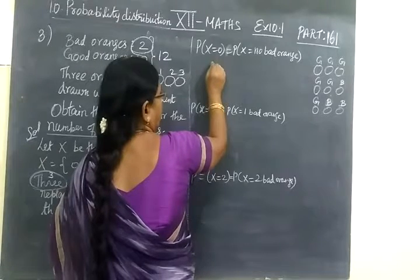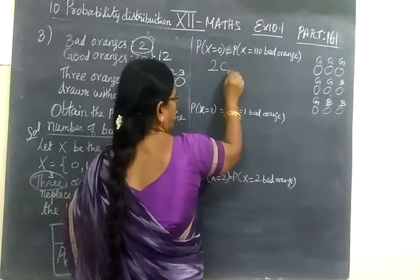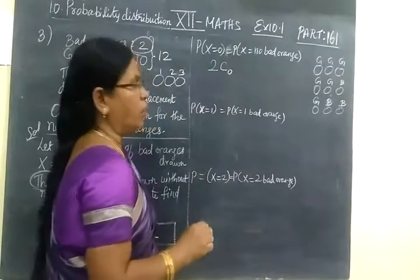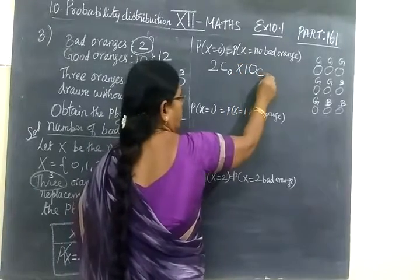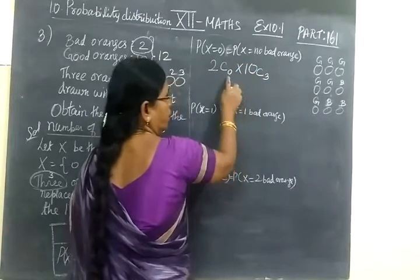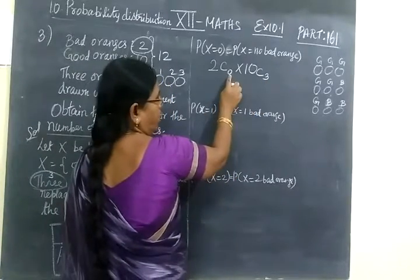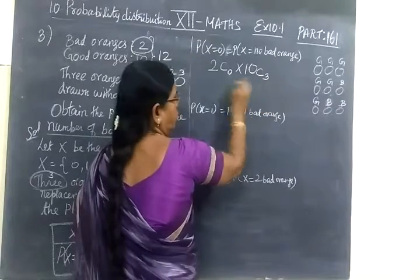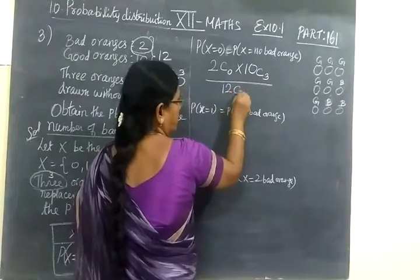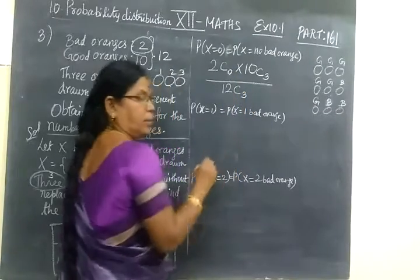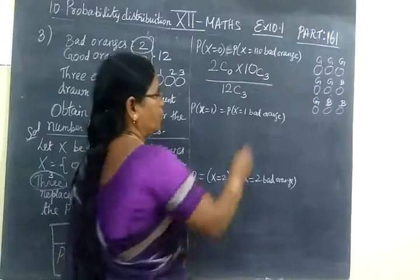So here you write 2 C 0, totally 2 bad oranges from that 0. All are good oranges, so 10 C 3. We are selecting 3 oranges out of, is no bad oranges, all are good, by totally 12 C 3 we are selecting. So 0 plus 3 is 3. It refers to this one.